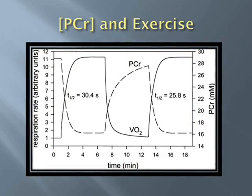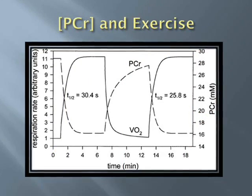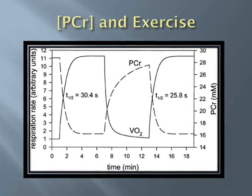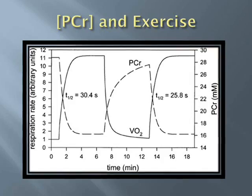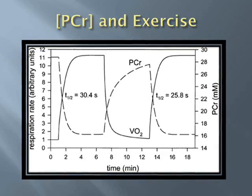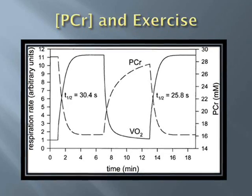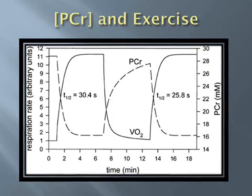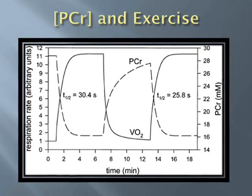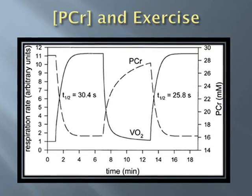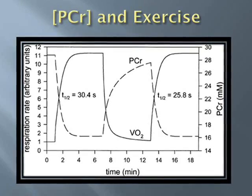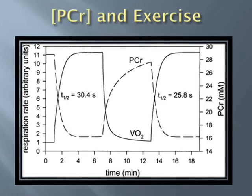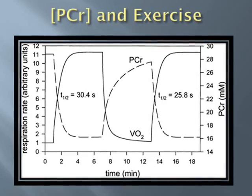The phosphocreatine system is the sole energy-producing pathway during the onset of exercise. Depletion of this high-energy pathway can occur up to 90% of total phosphocreatine stores during the first 10 seconds of maximal intensity exercise. Fortunately, the regeneration of phosphocreatine happens nearly as quickly — with 30 seconds of rest, half of phosphocreatine stores can be regenerated.